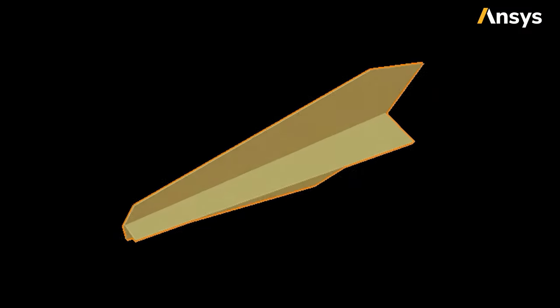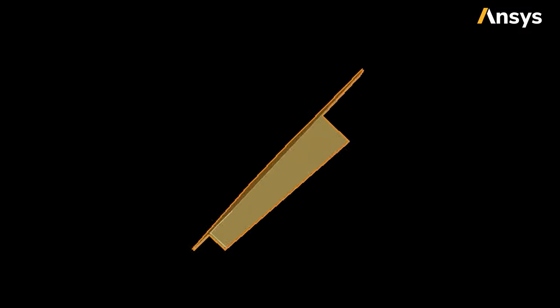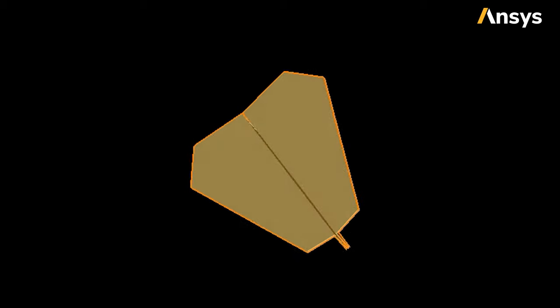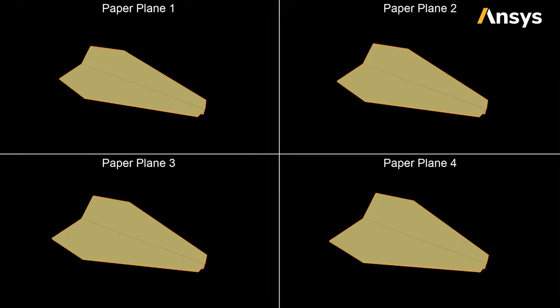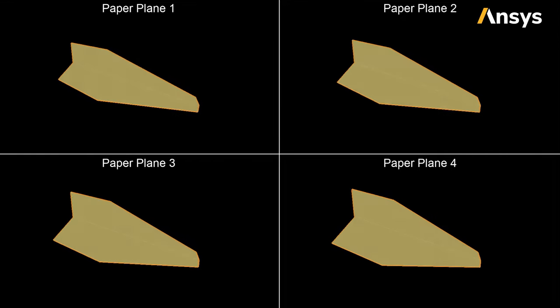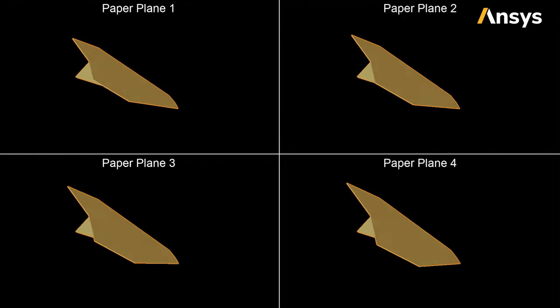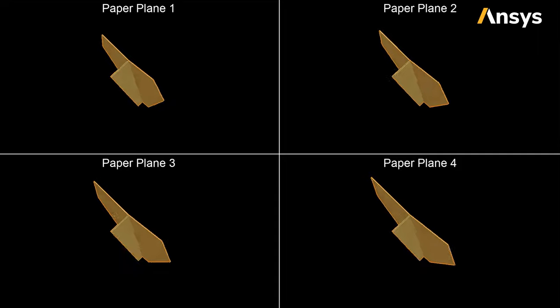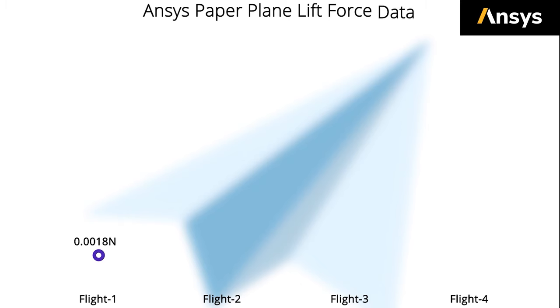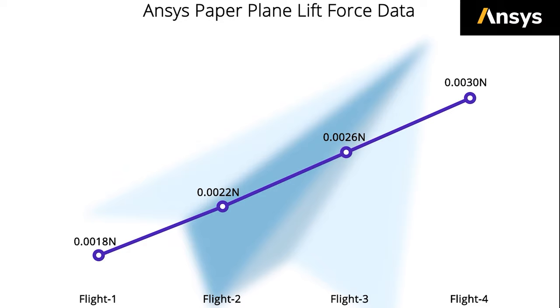With ANSYS simulation technology, we can easily change the wing size of the paper plane and find out which design will produce more lift. In this graph, the lift produced by the different paper planes is reported. You can see that the models with larger wing area generate more lift.